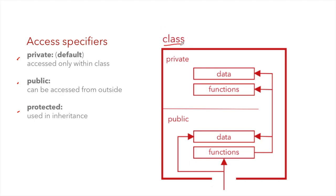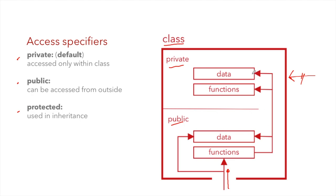Let's understand access specifiers with a class diagram. This class has two access specifiers: private and public. Public members are accessible from outside the class, while private members are not directly accessible. However, you can access private members through public member functions. Public functions have access to both public data and private data and functions.